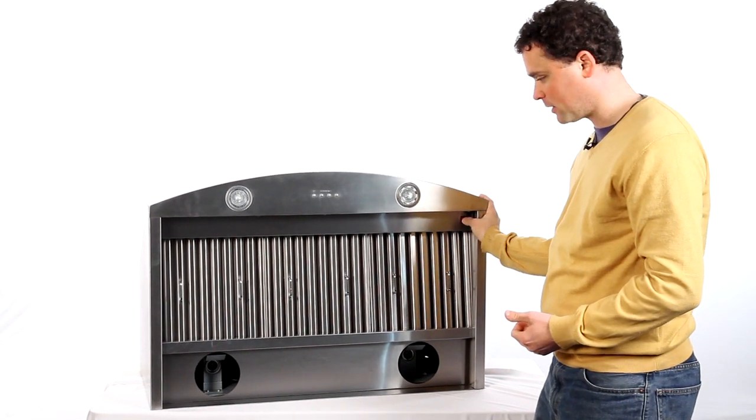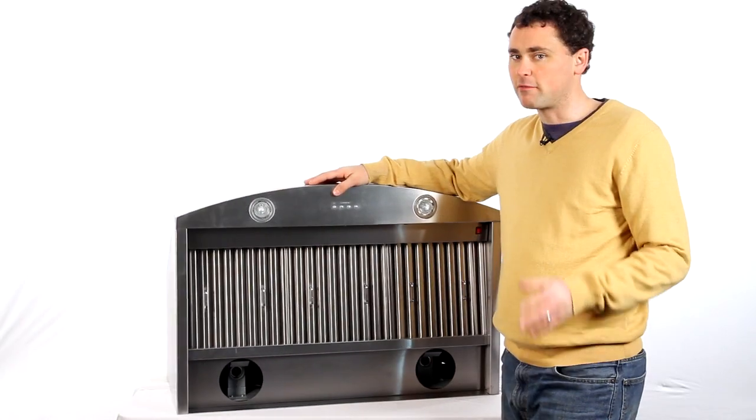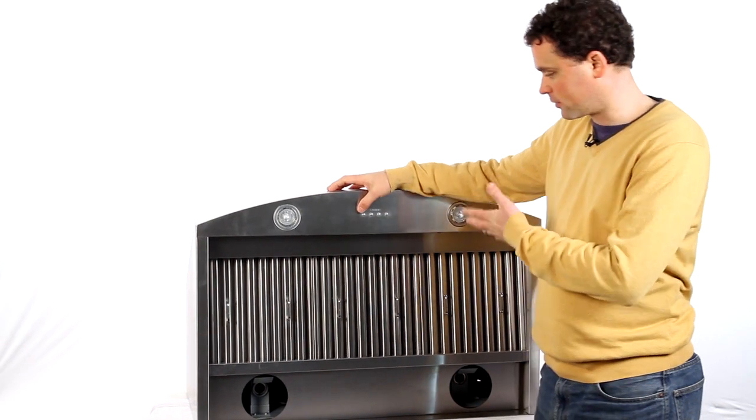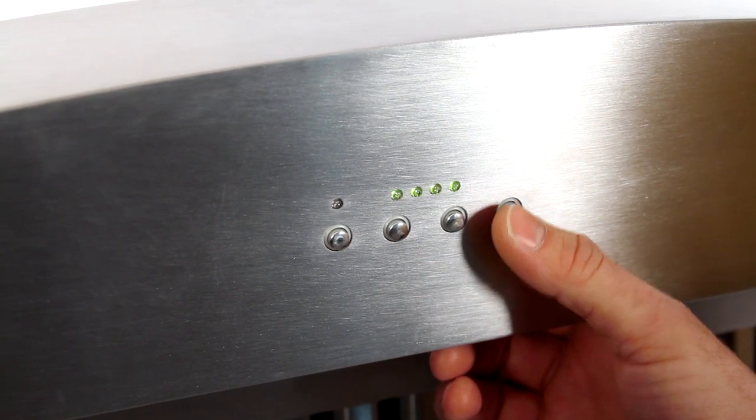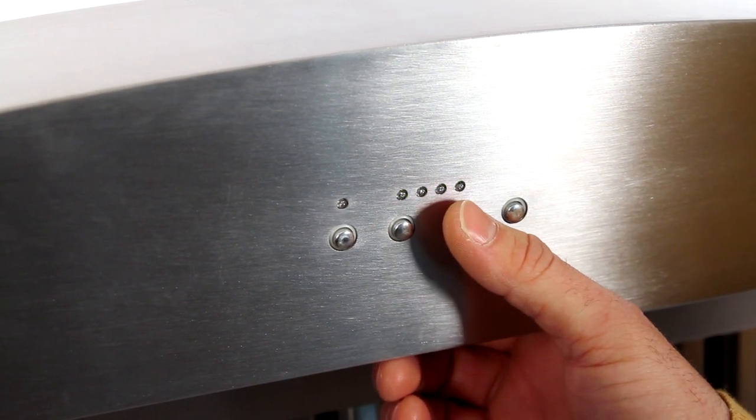Here's your switch right up in here. Everything on this range hood is controlled right here in the control panel. You have your lights on and off, power to your blower and the speed select.